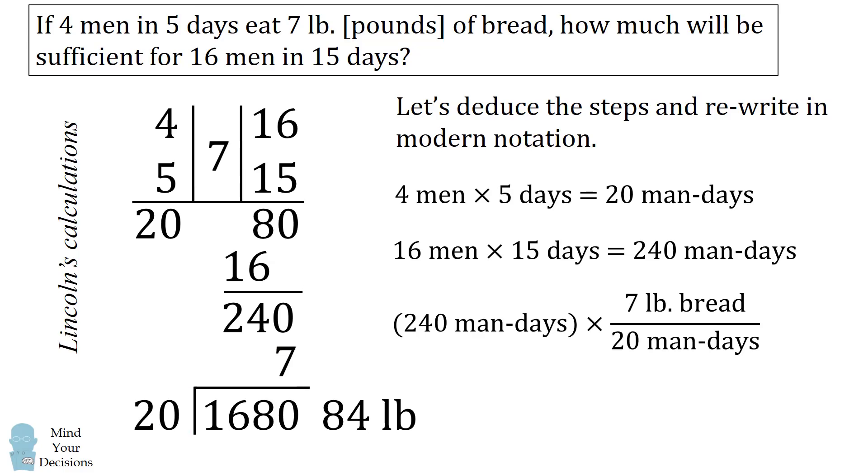So he first does 240 times 7, which gets 1680. He then takes 1680 divided by 20, and that gets to the answer of 84 pounds. So there were a few calculations involved, but he did get to the correct answer of 84 pounds. And this is a valid method to approach the problem. However, you can see there is much potential for making a mistake. If he did 240 times 7 incorrectly, he would not get the correct answer.